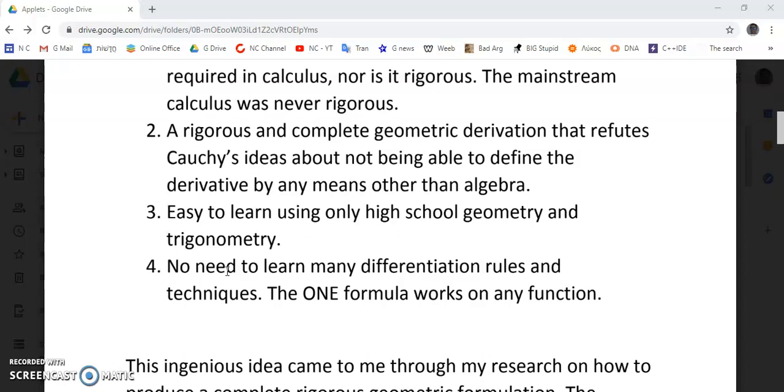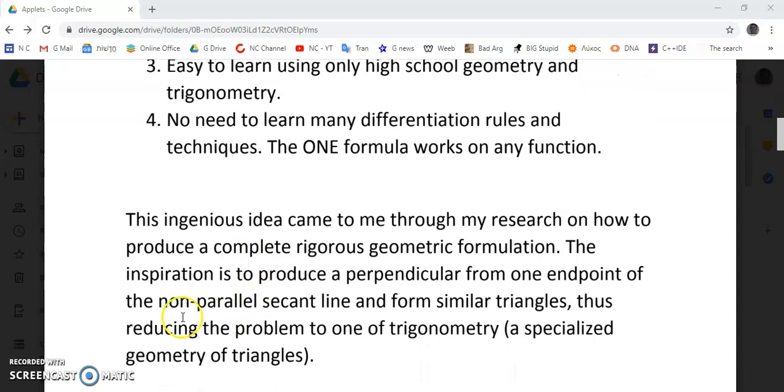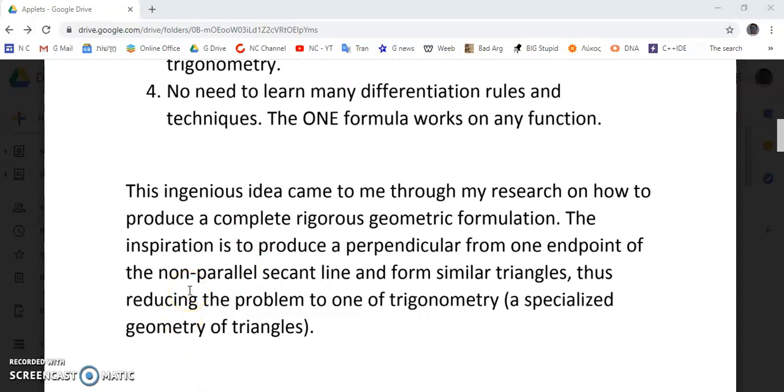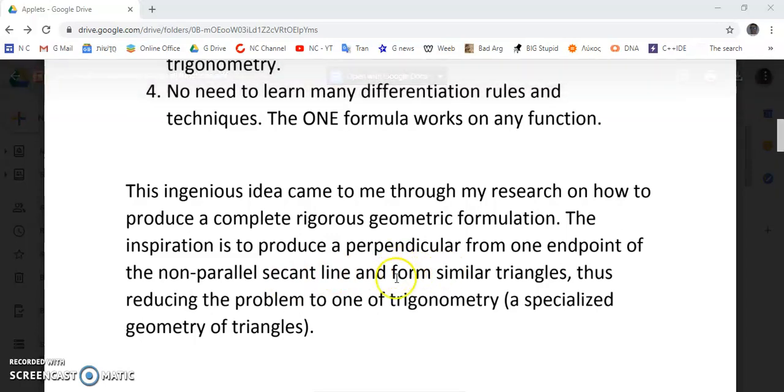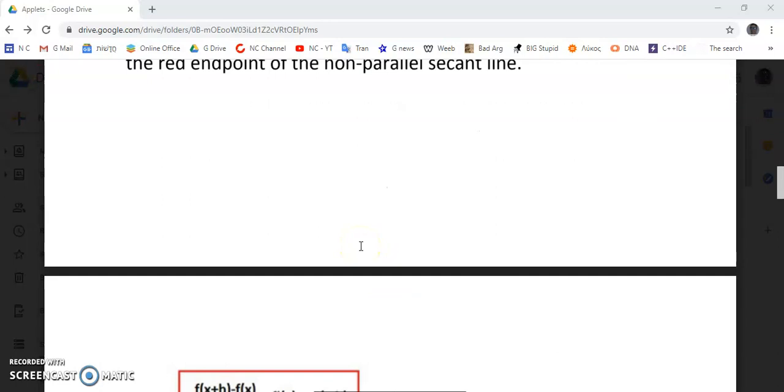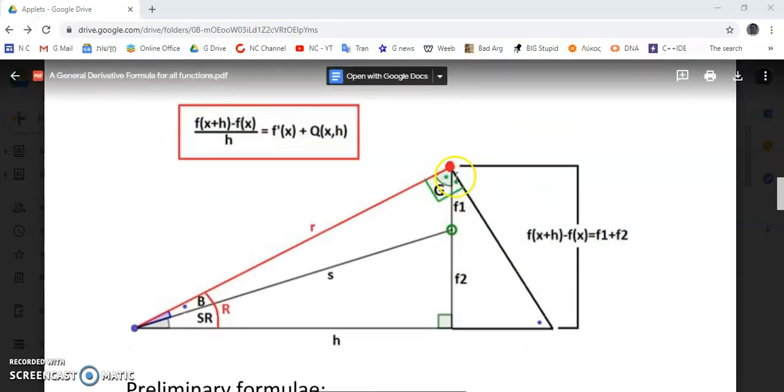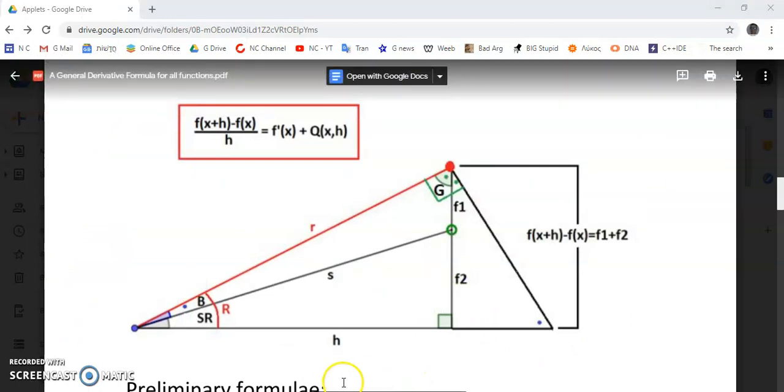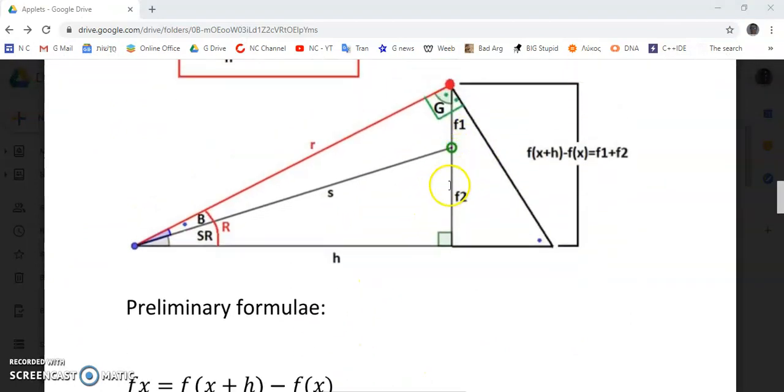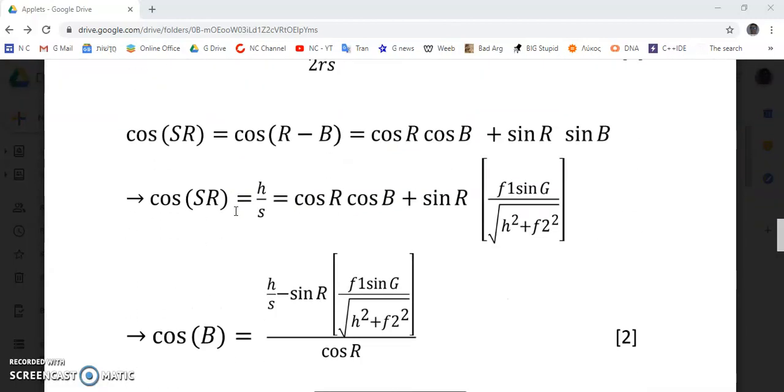So this ingenious idea came to me through the research on how to produce a complete geometric formulation that is rigorous. The inspiration was to produce a perpendicular from the endpoint of the non-parallel secant line. So this perpendicular here would create two similar triangles. As you see, there's another one here which I haven't drawn, but if you draw a perpendicular here like that, the other similar triangle is here, right?